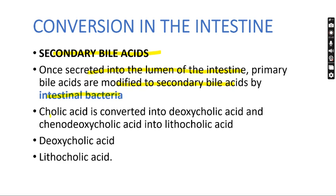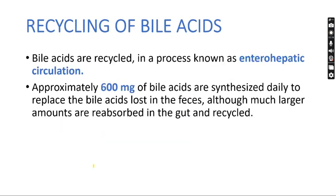Primary bile acids are modified to secondary bile acids by intestinal bacteria. Cholic acid is converted into deoxycholic acid, and chenodeoxycholic acid is converted into lithocholic acid. Bacteria convert them because these are toxic — they are more acidic and disrupt the bacterial cell membrane. So bacteria convert them into deoxycholic acid and lithocholic acid to protect themselves. These are the secondary bile acids.